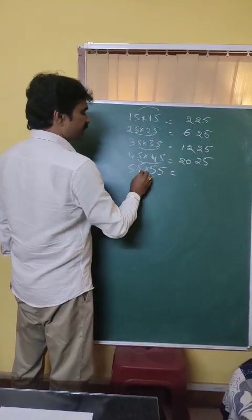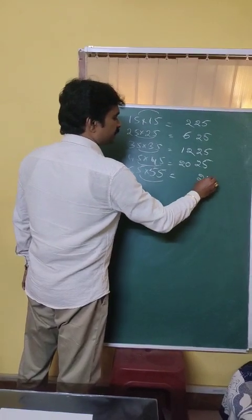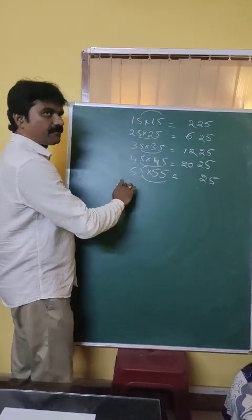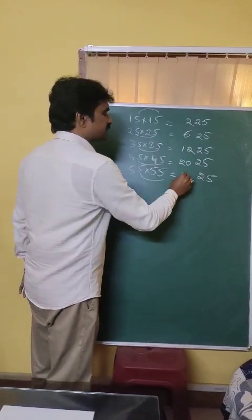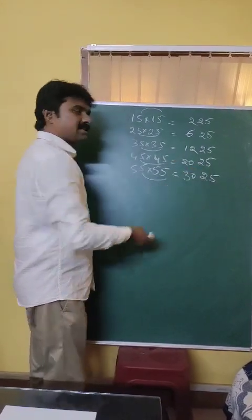And in the same way, 5 into 5, 25. And 5, after 5, we have 6. 5 into 6, 30. So you can check the answers.